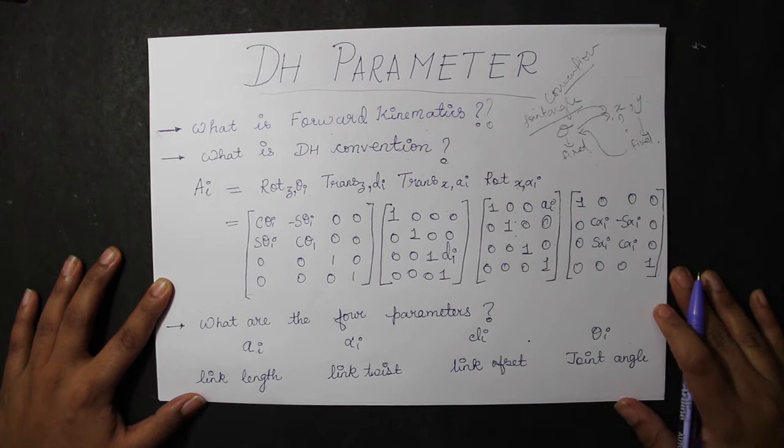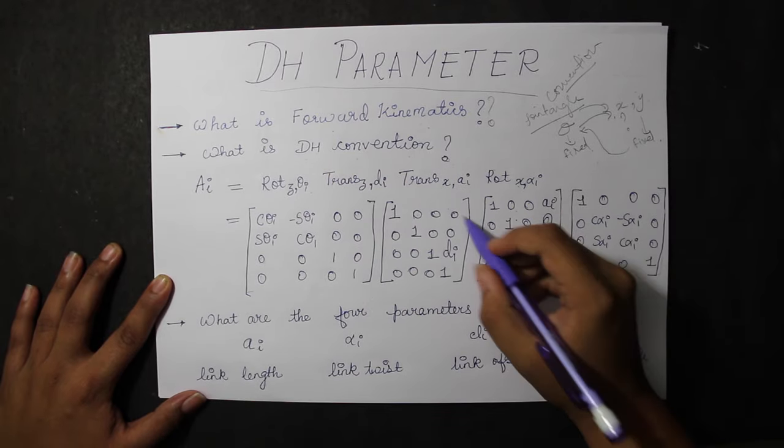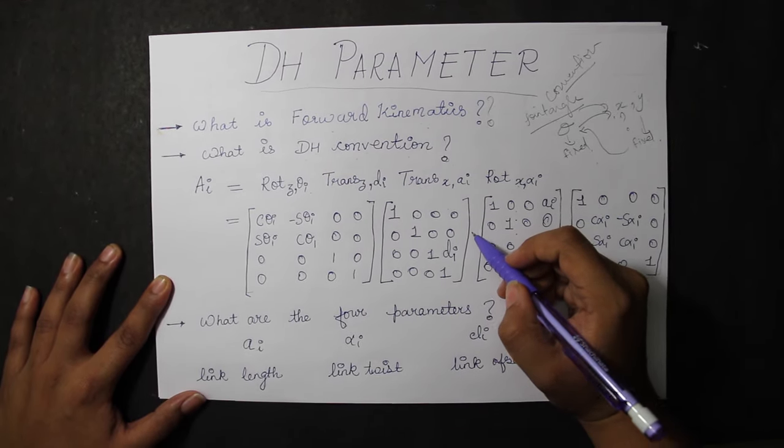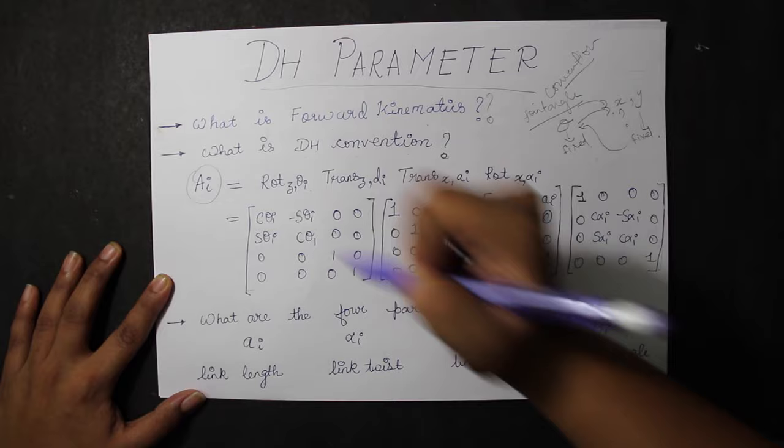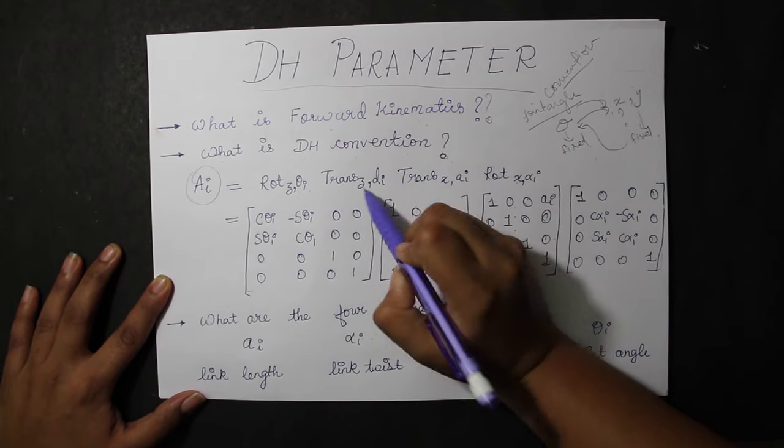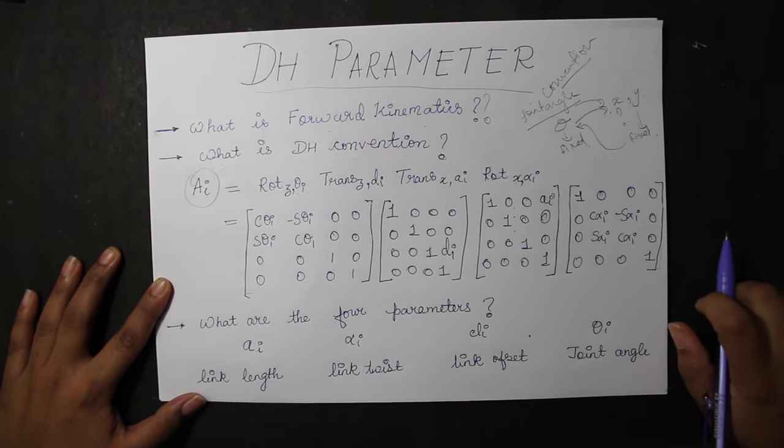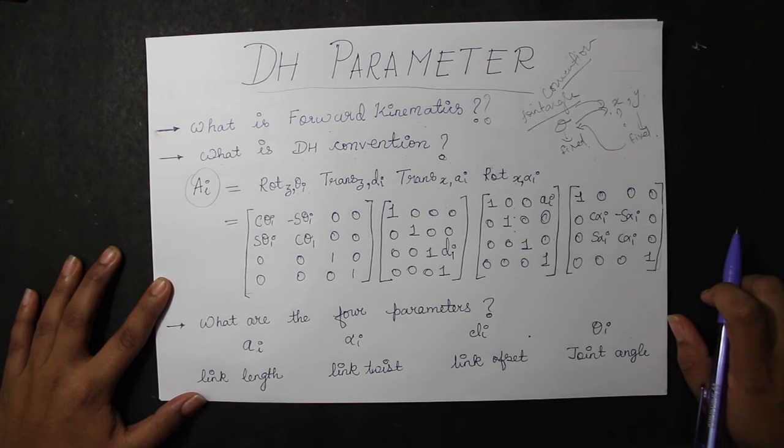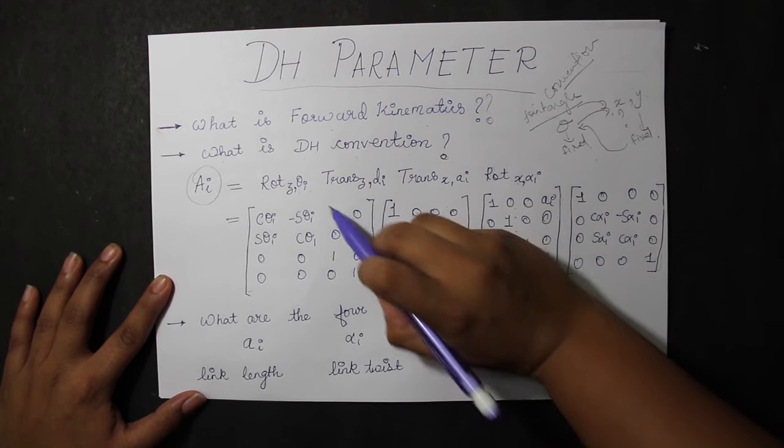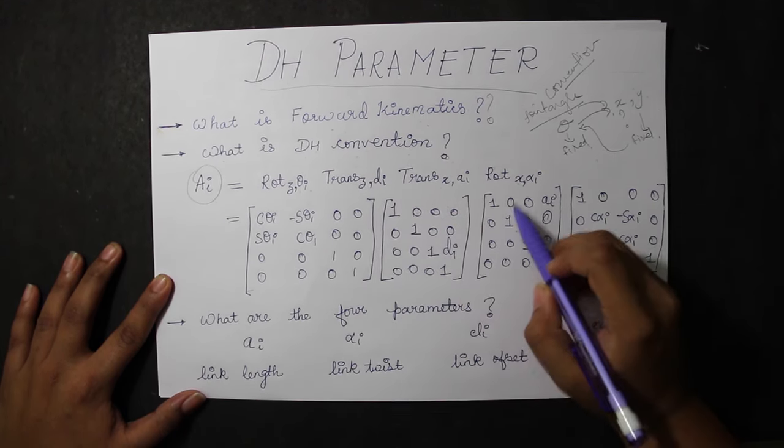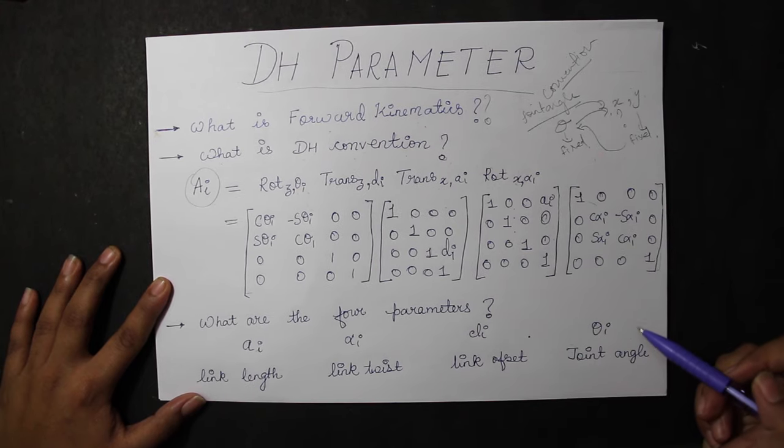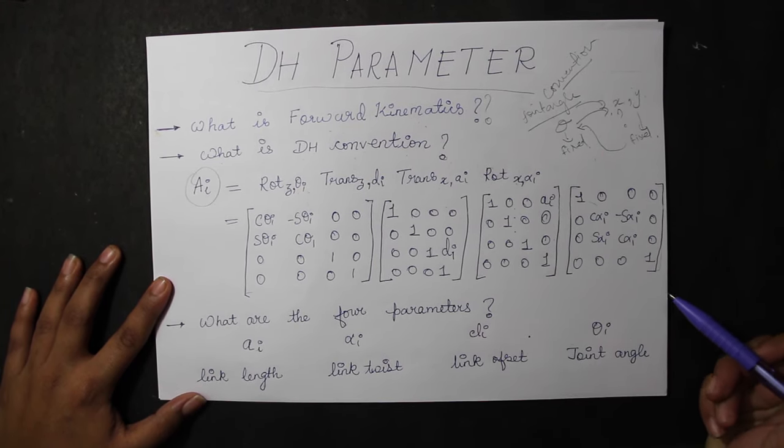Now let us look at what DH convention is. This convention links the homogeneous transformation AI with the four basic transformations to find out the forward kinematics. So if we know the four basic transformations of the manipulator, we can find out its forward kinematics. What are the four basic transformations?